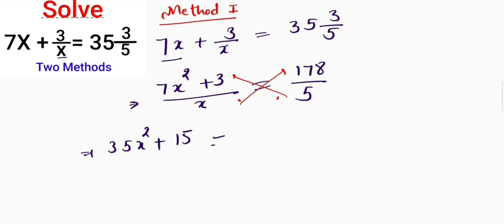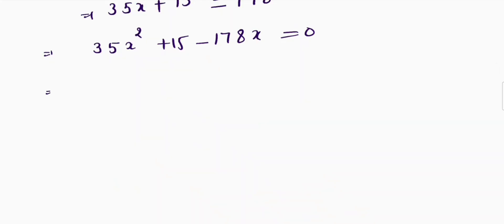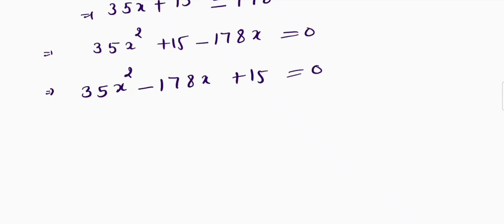That gives 15, equal to 178 times x. I'll bring 178x to the left-hand side, so the sign changes to negative 178x. I then rearrange and write this quadratic equation in standard form: 35x squared minus 178x plus 15 equals 0.